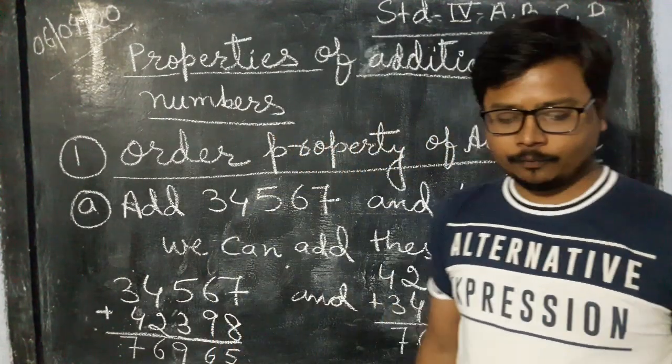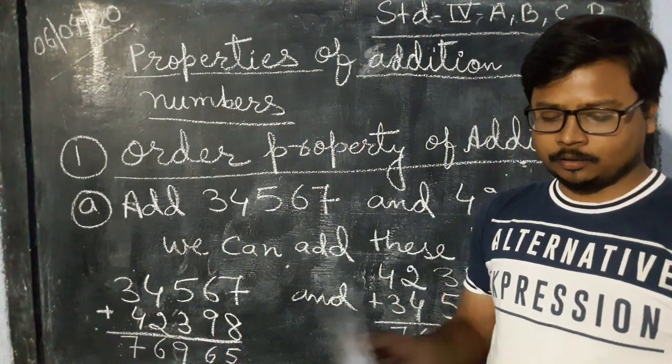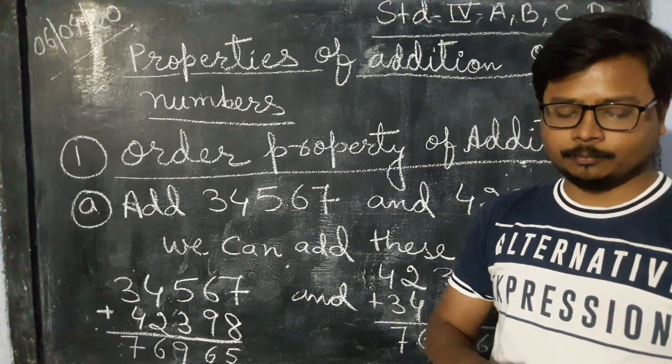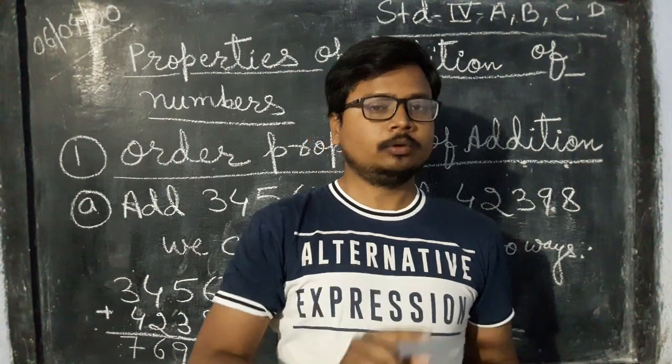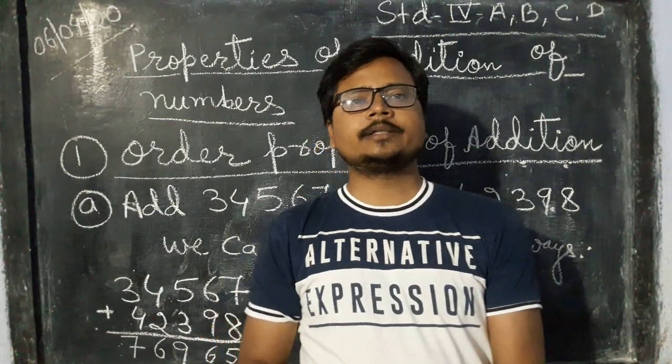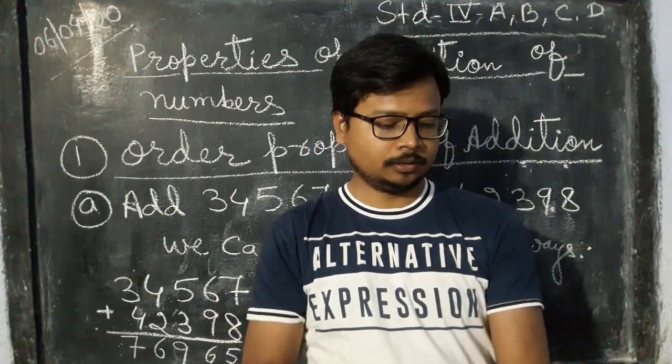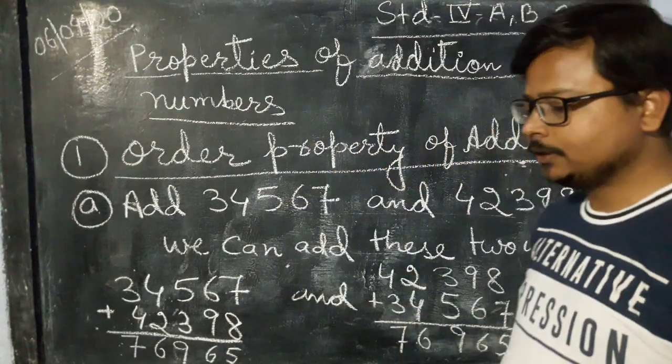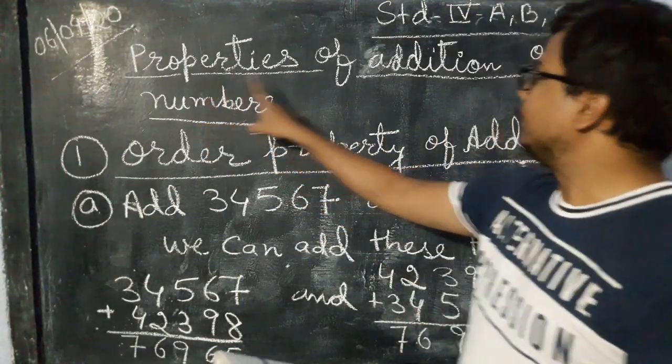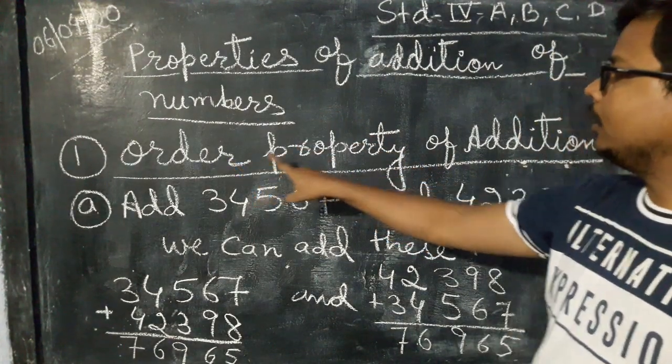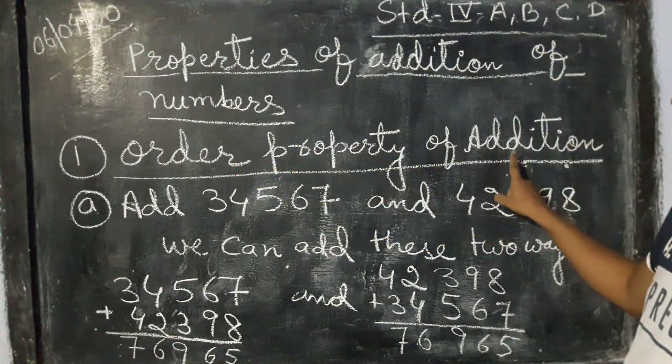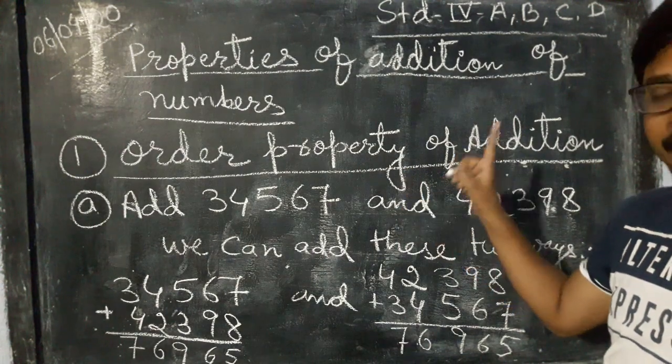As we have read the two ways to add the numbers, that is addition with carrying and addition without carrying, now we are going to read some properties of addition. First property is order property of addition.